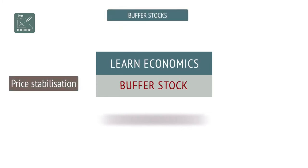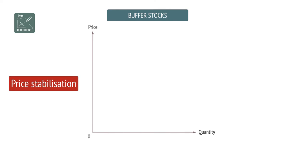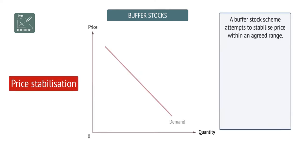A buffer stock scheme attempts to stabilize price within an agreed range. Let's assume the range is set between A and B.